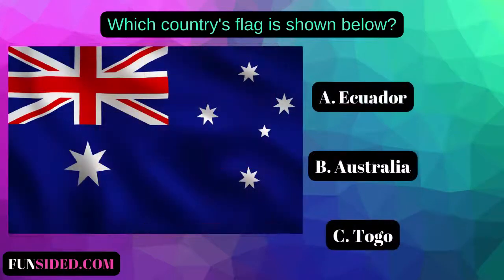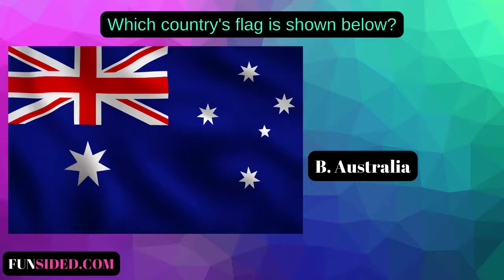Which country's flag is shown below? A. Ecuador. B. Australia. C. Togo. The correct answer is Australia.